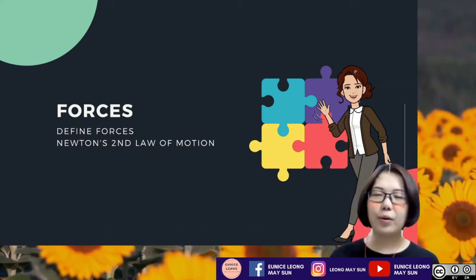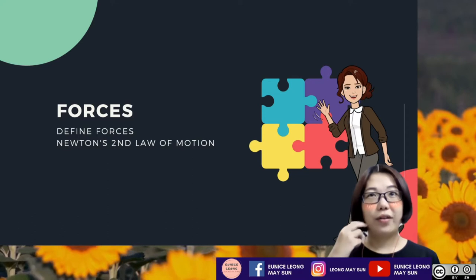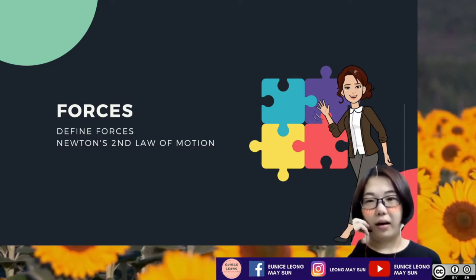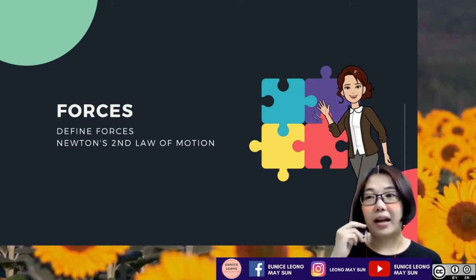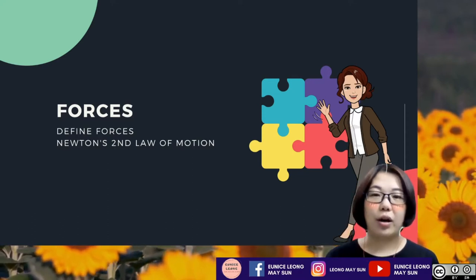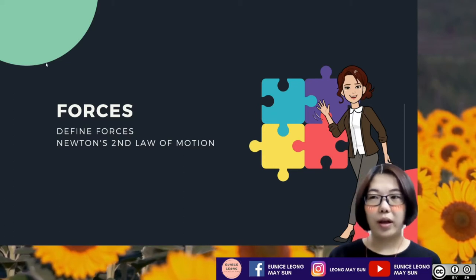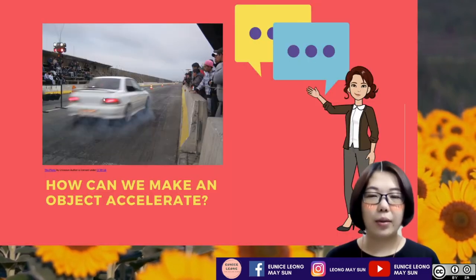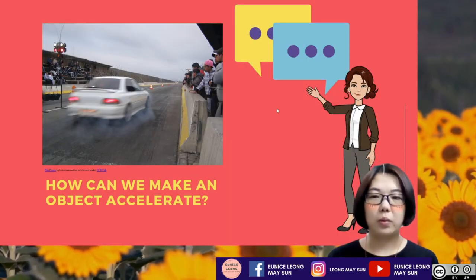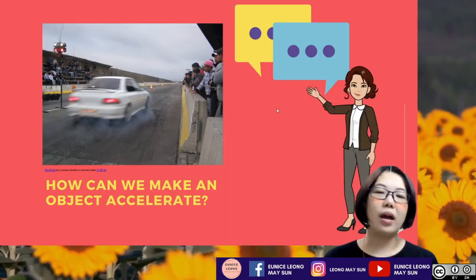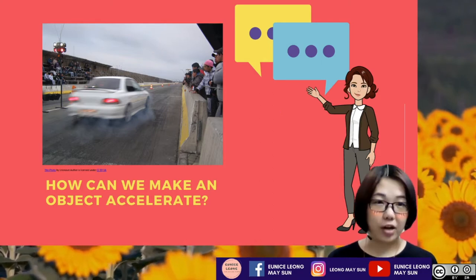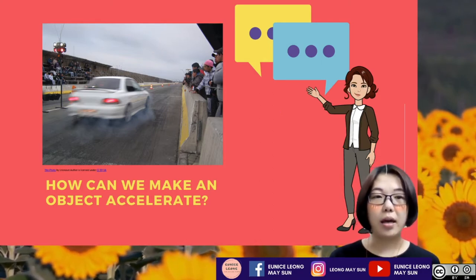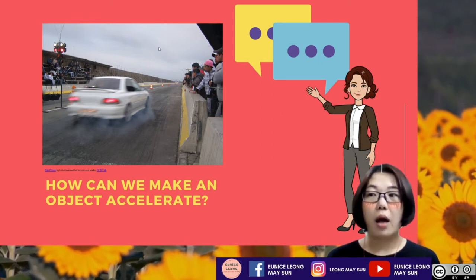Most of the time, students don't really understand what Newton's second law of motion is trying to say, so we're going to go into it one by one. Let's start with the first one: how can we actually make an object accelerate? How are we going to make an object move?